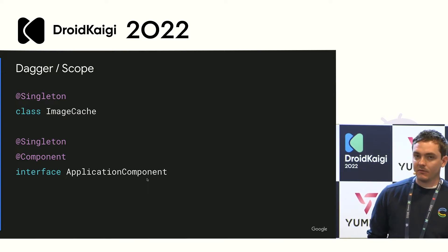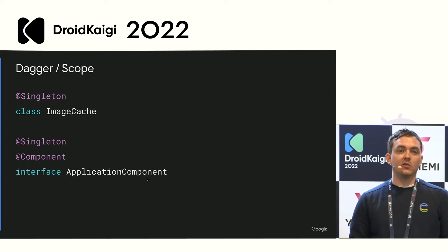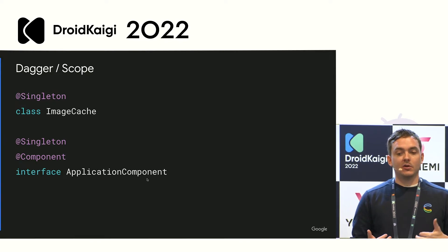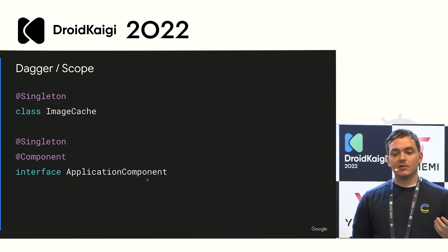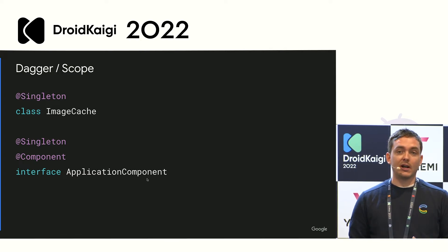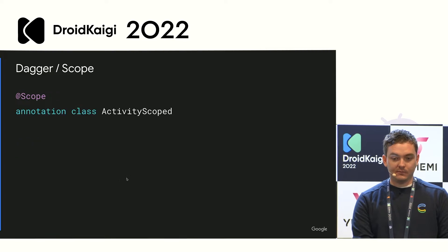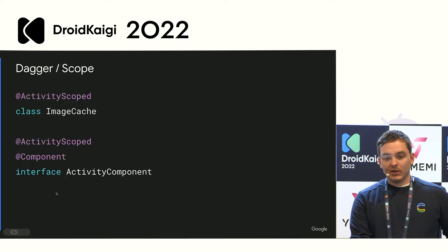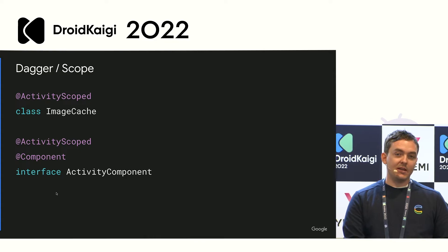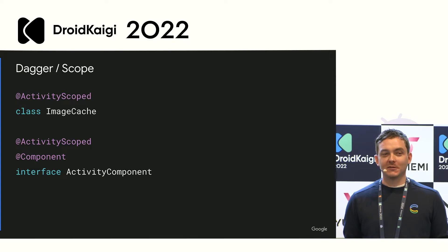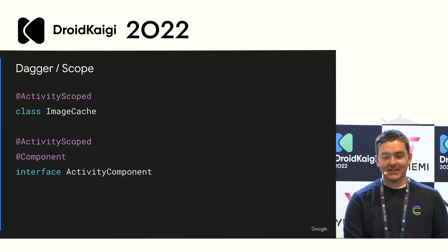Going back to the image cache example: if we want to ensure there's only one instance, we put Singleton on the application component and then the same on the image cache itself. This tells Dagger: every time I ask for image cache, give me the singleton instance. You can do the same for fragments or activities — if you want something to live for the lifecycle of an activity or fragment, you can create a custom annotation for fragment scope or activity scope.